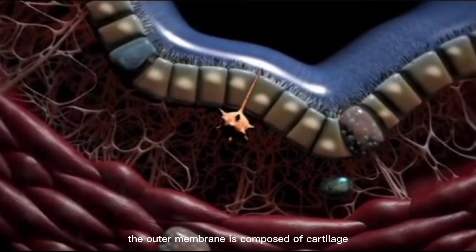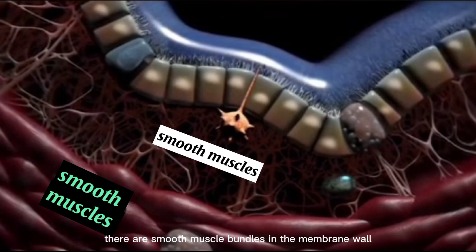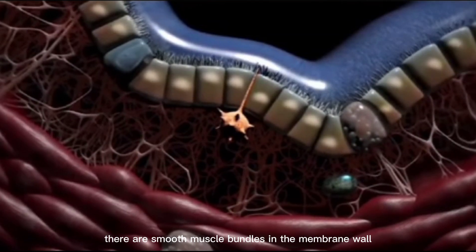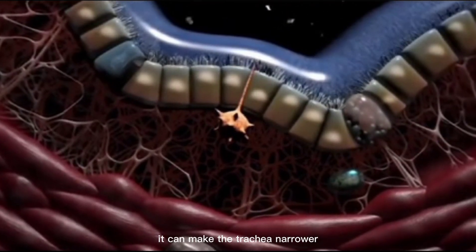The outer membrane is composed of cartilage and fibrous tissue. There are smooth muscle bundles in the membrane wall. When the smooth muscle contracts, it can make the trachea narrower.